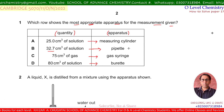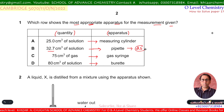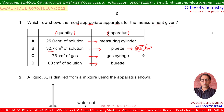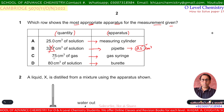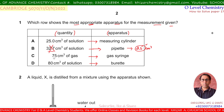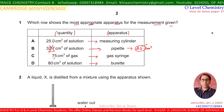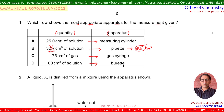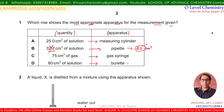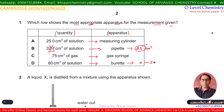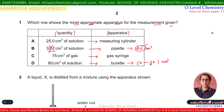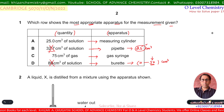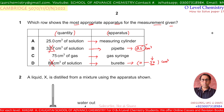First, a pipette cannot measure more than 25 cm³ of solution — the maximum capacity is 25 cm³. So it is not able to measure 32.7 cm³ or any fractional volume beyond that. B is incorrect. For option D, a pipette ranges from 0 to 50 cm³, so we cannot measure 80 cm³ precisely or accurately. D is also incorrect.